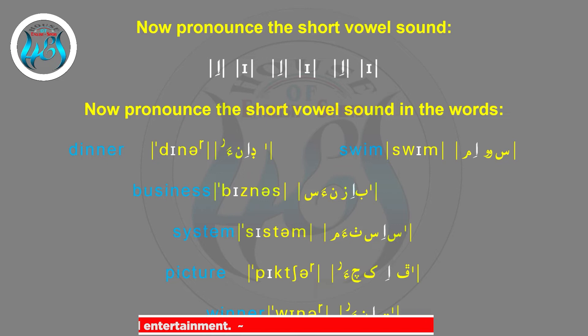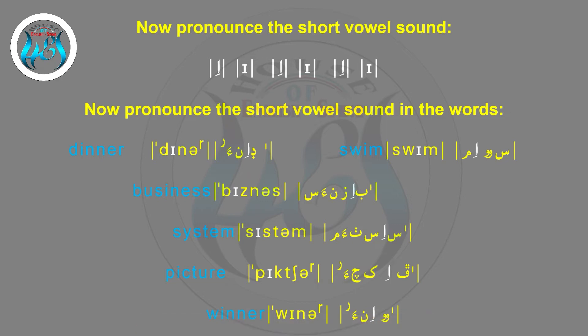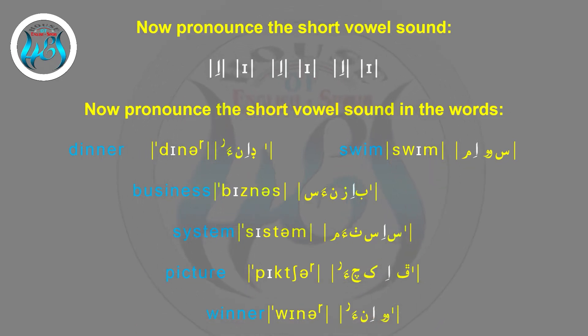Now pronounce the short vowel sound in the words: Dinner, Swim, Business, System, Picture, Winner.